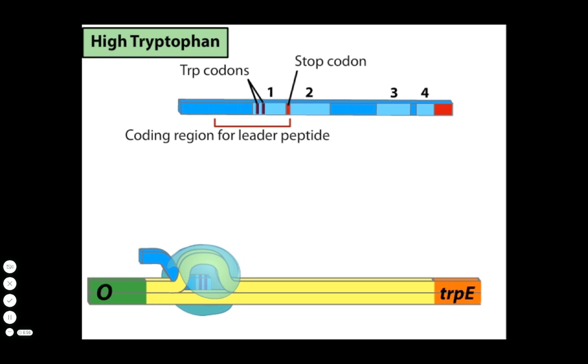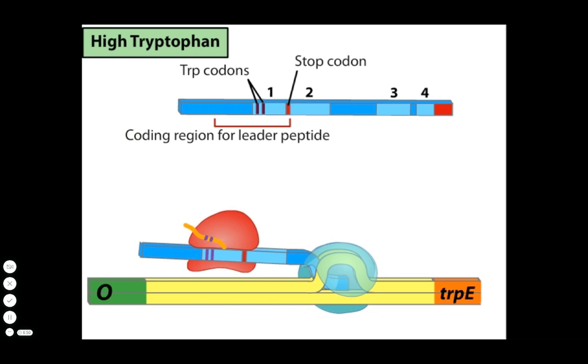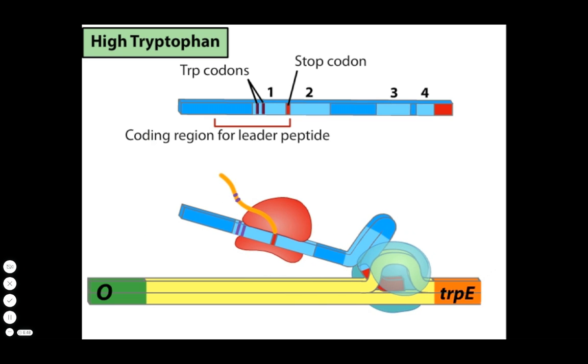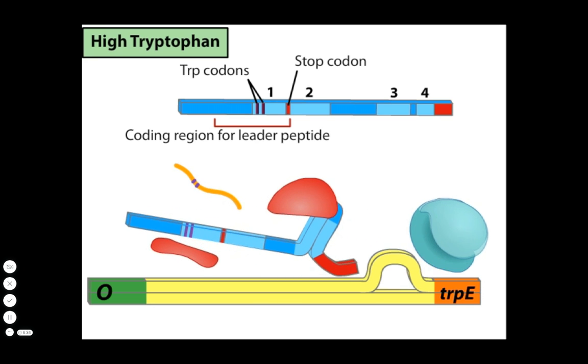Shortly after RNA polymerase begins transcription, a ribosome begins translation. With plenty of tryptophan in the cell, the ribosome doesn't pause until it reaches the stop codon. Stalled at this position, the ribosome covers regions 1 and 2. Thus, regions 3 and 4 are free to pair. Under conditions of high tryptophan, attenuation occurs.